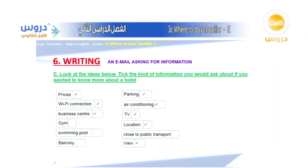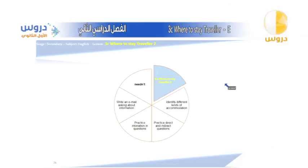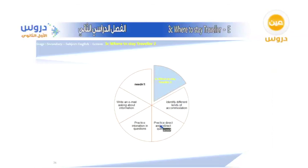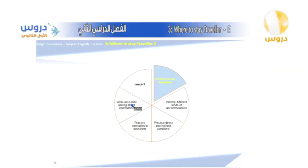This is the end of our lesson today. The title is lesson 3C: 'Where to Stay' from Traveler Two. Summary of goals: identify different kinds of accommodation, practice direct and indirect questions, practice intonation, and write an email asking about information.